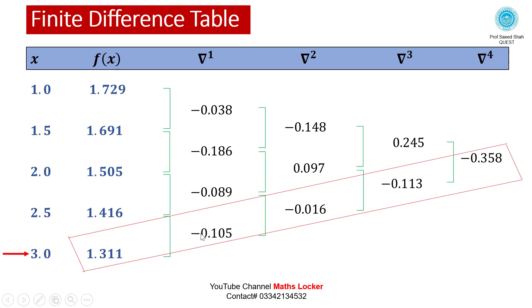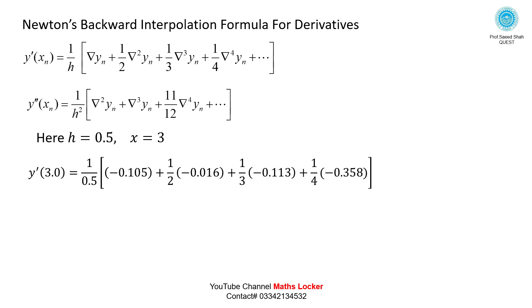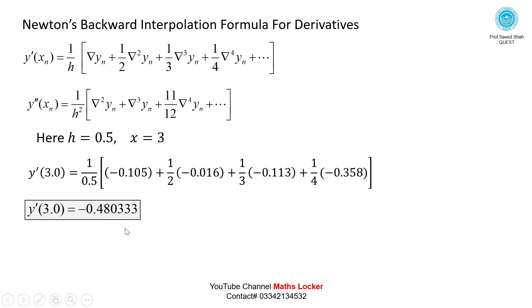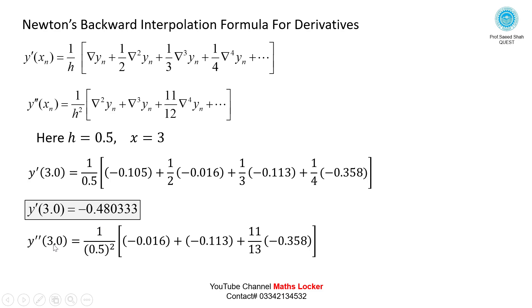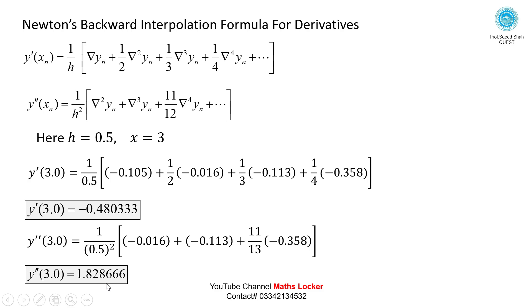Using the values from the diagonal of the table and simplifying, the first derivative F'(3.0) = −0.480. Then putting values into the second derivative formula with h = 0.5 squared and the differences Δ², Δ³, Δ⁴, after simplifying, the second derivative y''(3.0) = 1.828666.